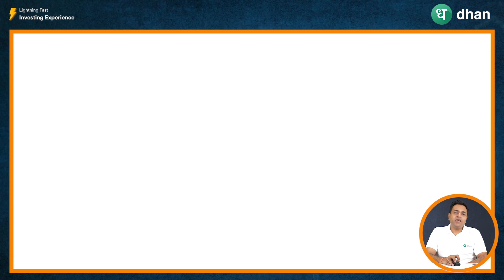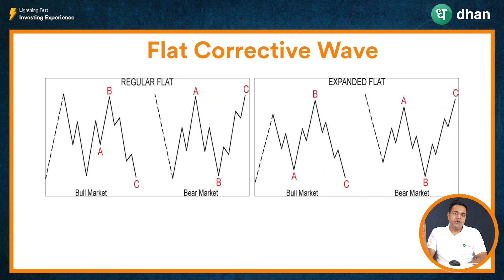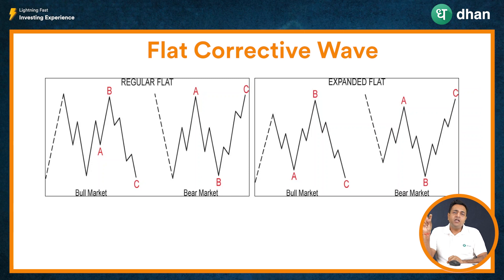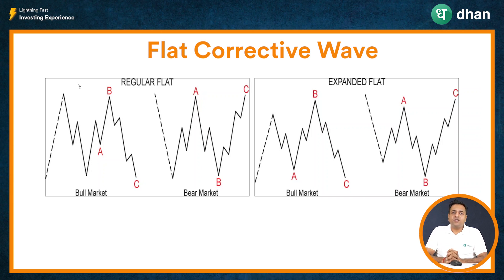Talking about a flat corrective wave, in this case you will see that the correction is mostly in a zone of consolidation. If you recollect from the old videos on Dow Theory, we spoke about a zone of accumulation, run-up, and distribution. Often when the distribution is similar to accumulation and begins a fresh run-up, that zone is called a zone of accumulation or a zone of consolidation. So this corrective wave, whenever it is a flat structure, will mostly look like a zone of consolidation where prices go sideways.